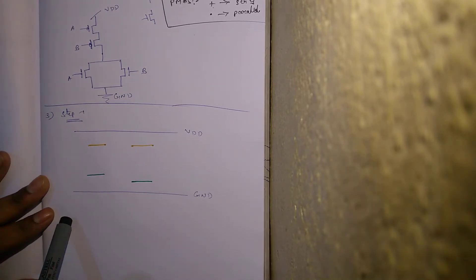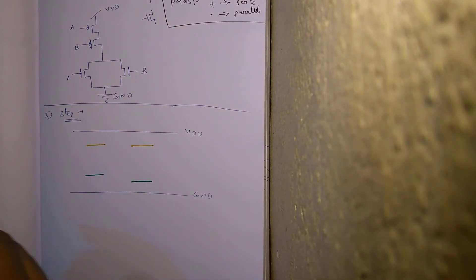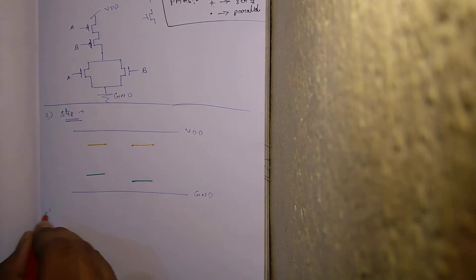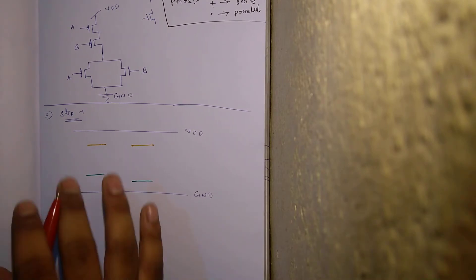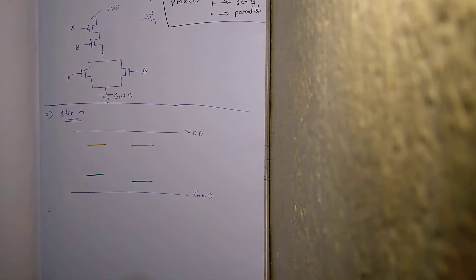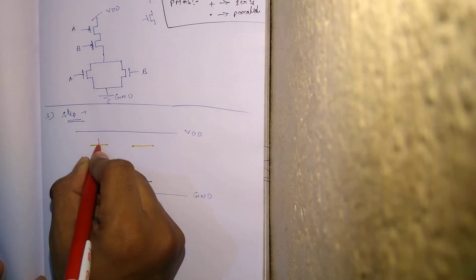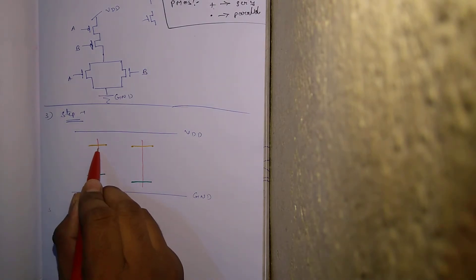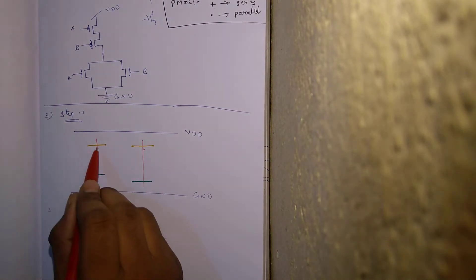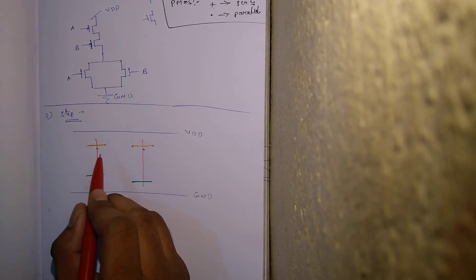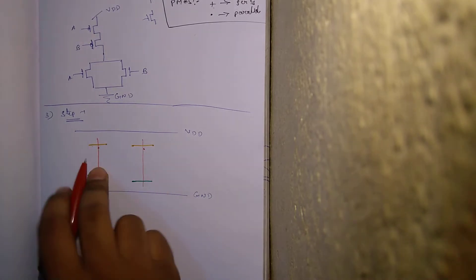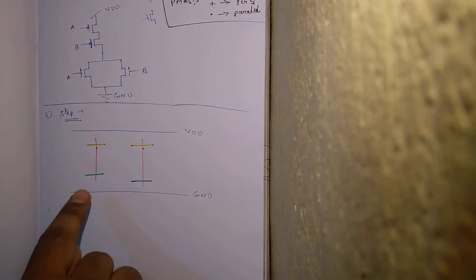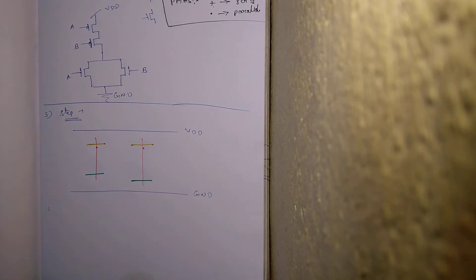Mark it as step one and write step two — repeat the same drawing. In step two, you draw the polysilicon line. This red line represents your polysilicon — this is a PMOS transistor, this is another PMOS transistor. The red crossbar represents a transistor. This is your PMOS transistor, this is another PMOS transistor, this is your NMOS transistor, and this is another NMOS transistor.